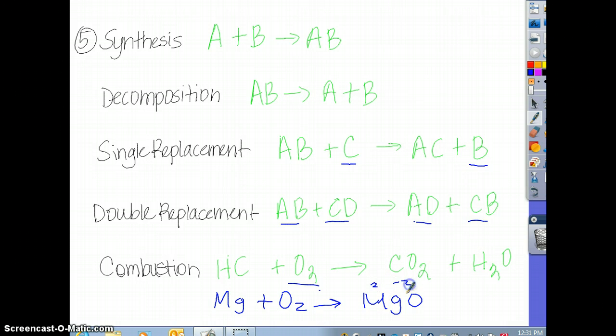You can also have a metal burning oxygen and you would make the metal oxide. This is two, this is negative two. So that was also one we did a couple weeks ago when we burned the magnesium. So it can be combustion, but it can also be synthesis.